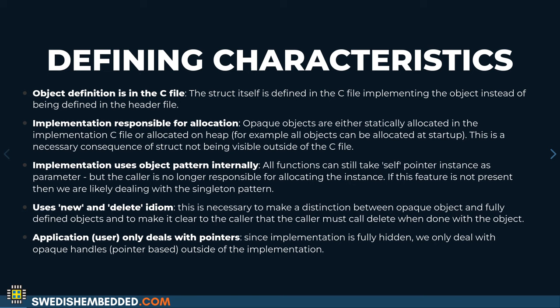If we want to make the object private, we need to make it opaque by including it in the implementation itself. We just declare the data type in the header file but place the actual definition of the data type in the C file. The biggest consequence is that the implementation is now responsible for allocating that object, because the caller doesn't know the size or the definition of the structure.